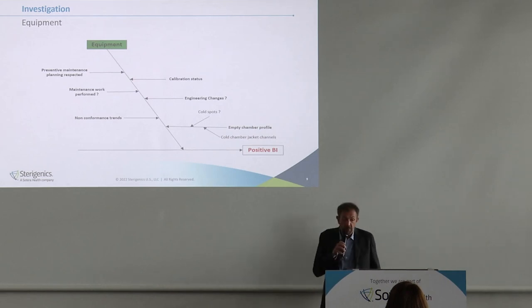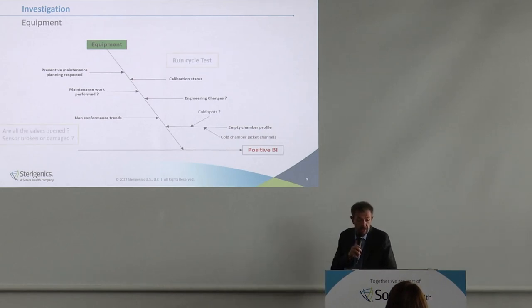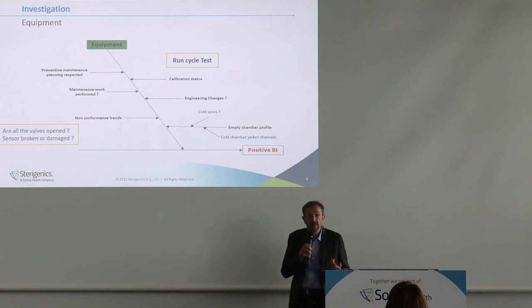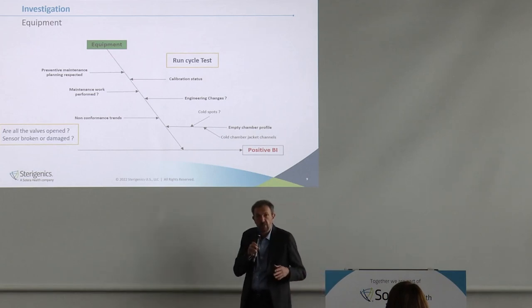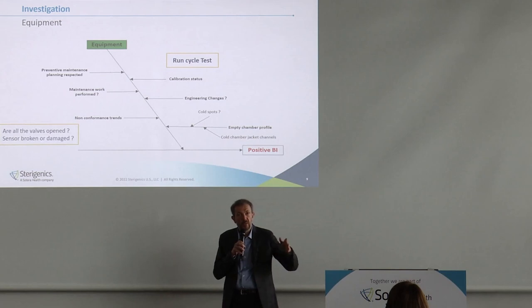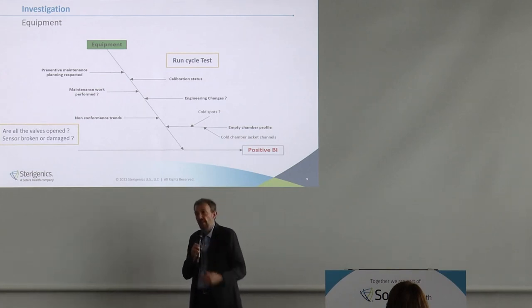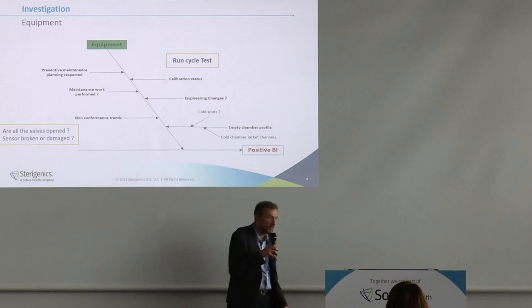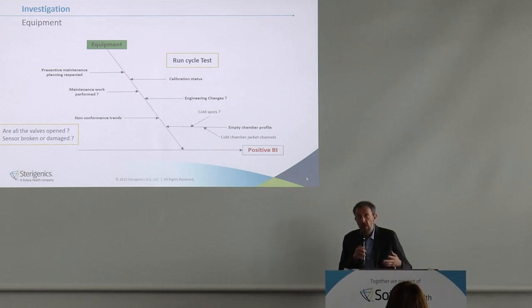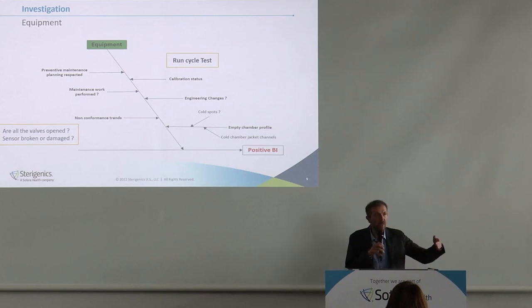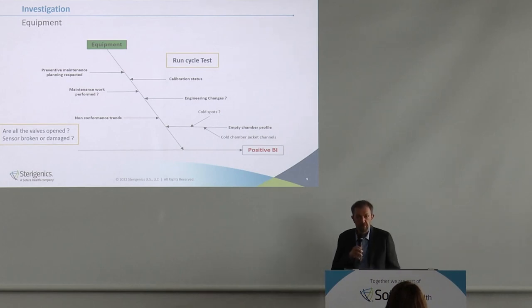The second aspect to consider is the equipment. We need to check if there was any maintenance or repair in the chamber that could change its behavior. We perform engineering test cycles to make sure the parameters delivered are the same as before, essentially repeating tests from the operational qualification to confirm that what was done initially is still being delivered.